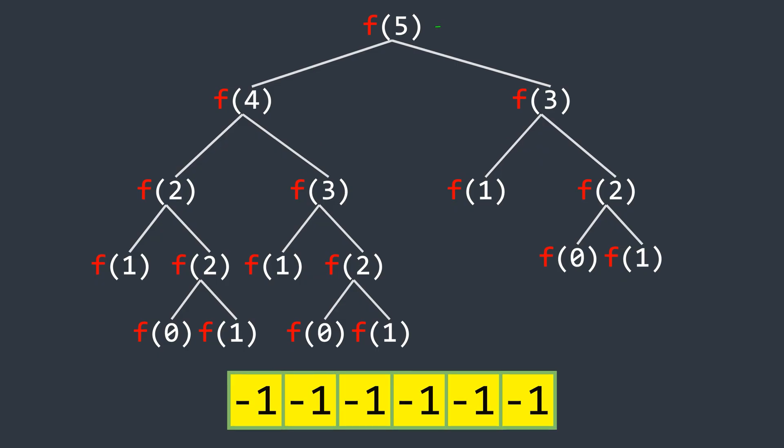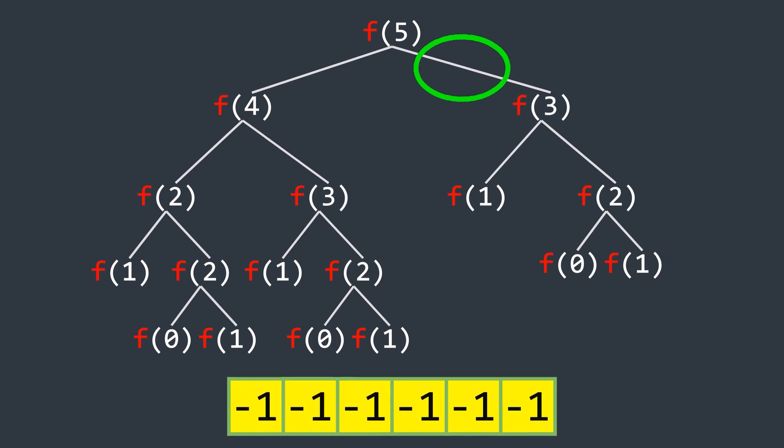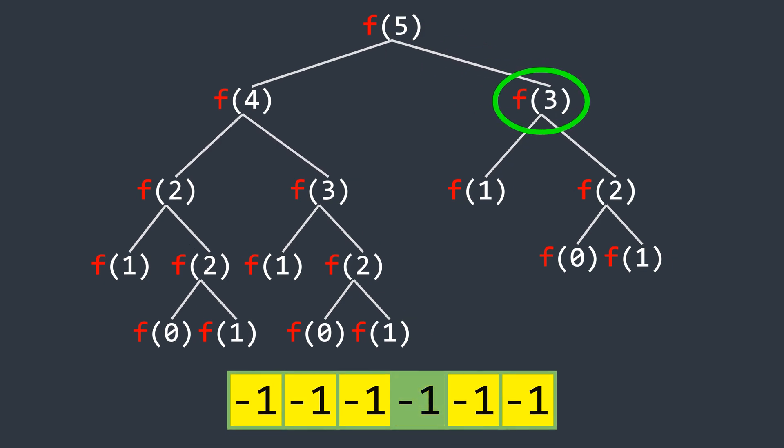Now, let's start calculating f of 5. The value at this index is minus 1, meaning we need to compute f of 4 and f of 3 first. Moving to f of 3, the value at index 3 is also minus 1. So we further break it down into f of 2 and f of 1. f of 1 is the base case, so we update the index 1 in the array to 1.